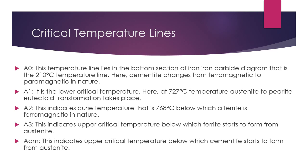Now we will see the critical temperature lines. There are five temperature lines. The A0 temperature line lies at the bottom section of the diagram at 210°C, where cementite changes from ferromagnetic to paramagnetic. The A1 temperature line is the lower critical temperature at 727°C, where the austenite-to-pearlite eutectoid transformation takes place. The A2 temperature line indicates the Curie temperature at 768°C, below which alpha ferrite is ferromagnetic in nature.